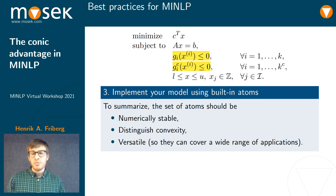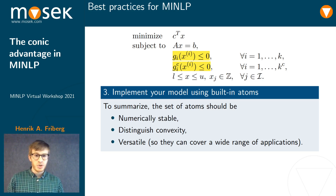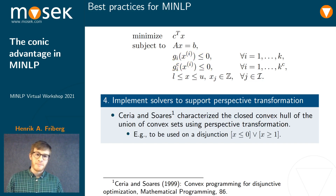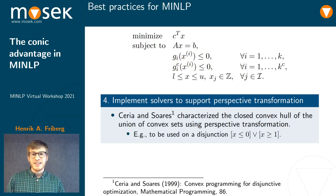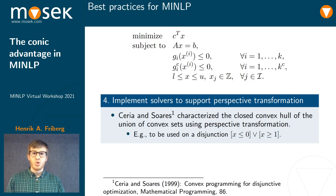But I'm thinking of a fourth property that would be really useful here. Can you guess what I'm thinking of? Perspective transformation – this is really essential when you want to provide a stronger model formulation.